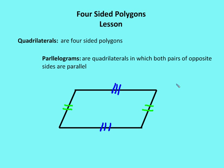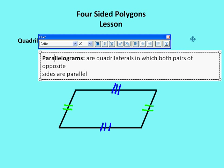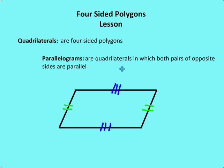Now let's talk about quadrilaterals. Quadrilaterals are four-sided polygons. At a higher level, quadrilaterals consist of parallelograms. Parallelograms are quadrilaterals in which both pairs of opposite sides are parallel — one side on the top and one on the bottom are parallel, and the left and right sides are parallel as well.